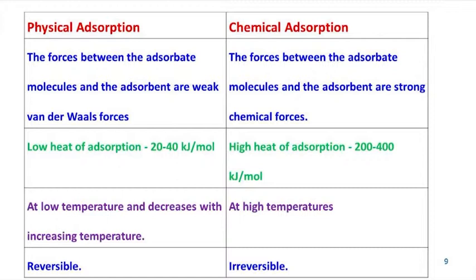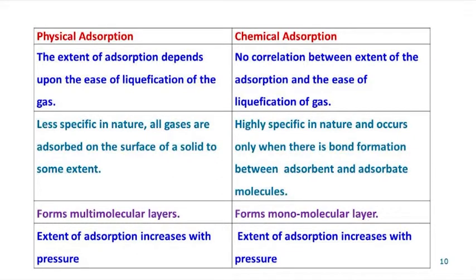Physical adsorption is reversible and chemical adsorption is irreversible. The extent of adsorption depends upon the ease of liquefaction of gases in the case of physical adsorption, whereas in chemisorption there is no correlation between the extent of adsorption and the ease of liquefaction of gases. Physical adsorption is less specific in nature and all gases are adsorbed on the surface of a solid to some extent, whereas chemical adsorption is highly specific and occurs only when there is bond formation between adsorbent and adsorbate molecules. Physical adsorption forms multi-molecular layers whereas chemical adsorption forms a mono-molecular layer.